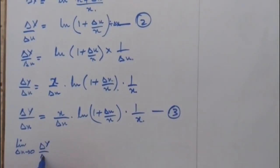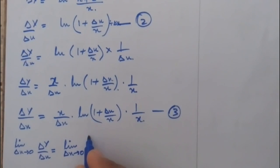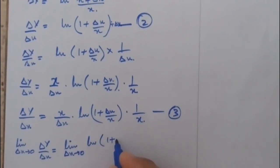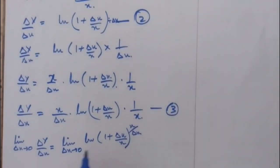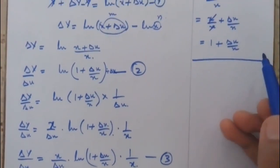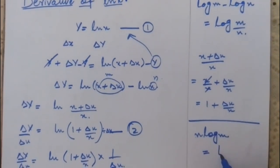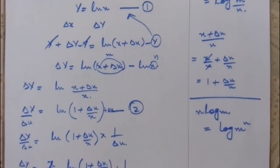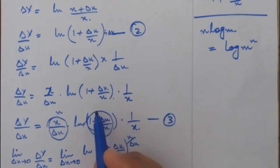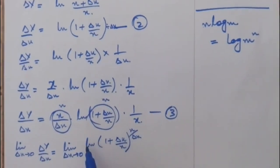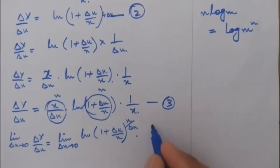Limit del x tends to 0 of ln(1 plus del x/x) whole power (x upon del x). Here a property of logarithm will be used: if we have n log m, it equals log m to the power n. So considering x upon del x as n and (1 plus del x/x) as m, we can write this as ln(1 plus del x/x) whole power (x upon del x) into 1 upon x.